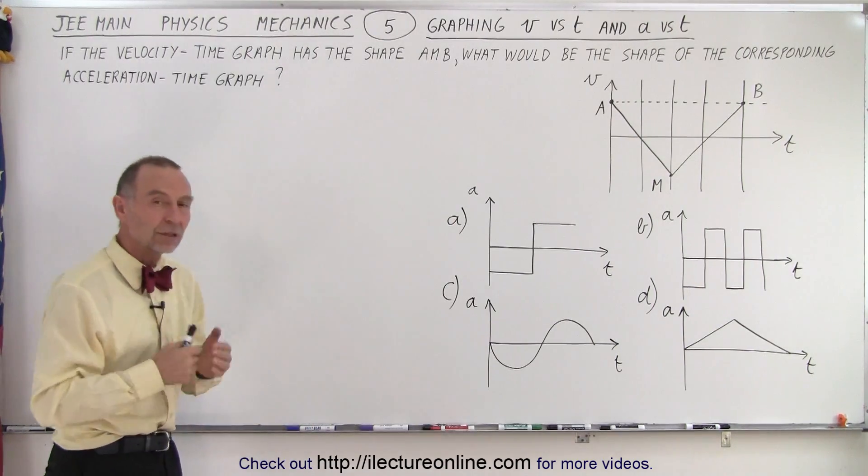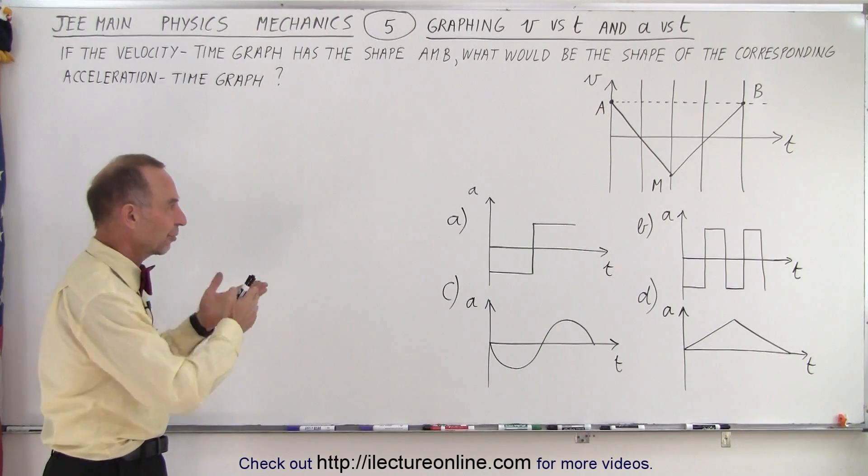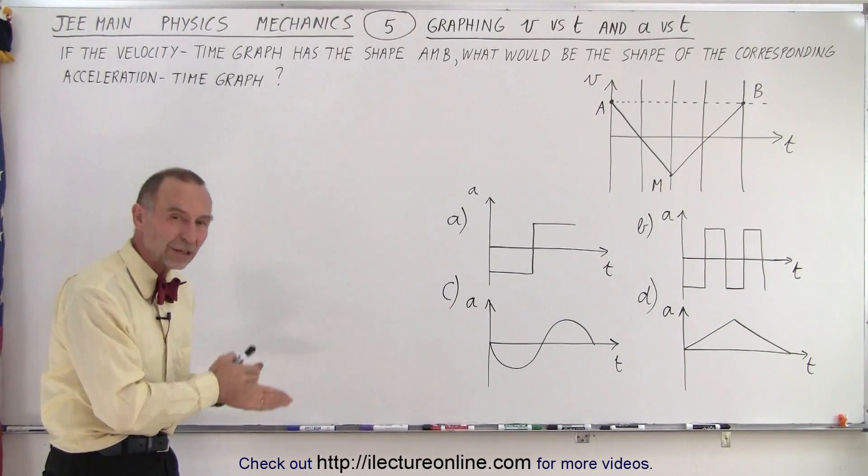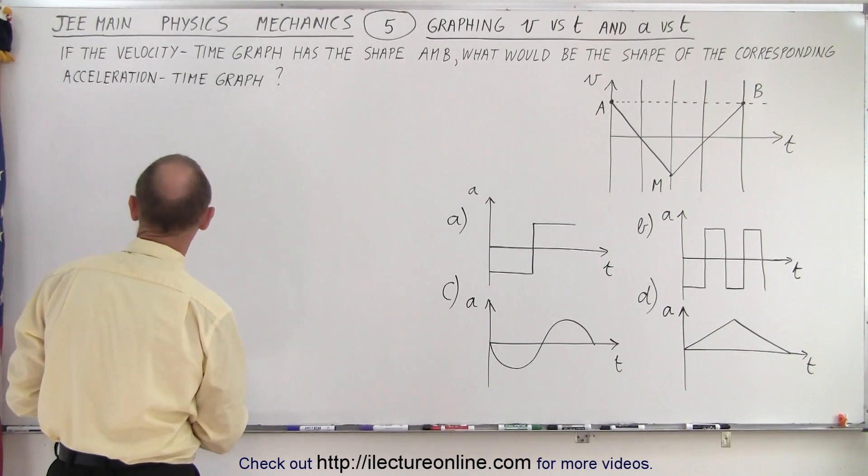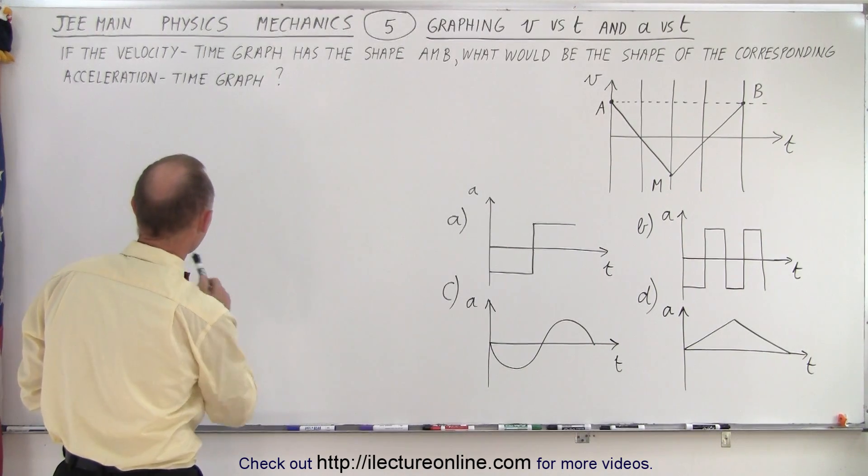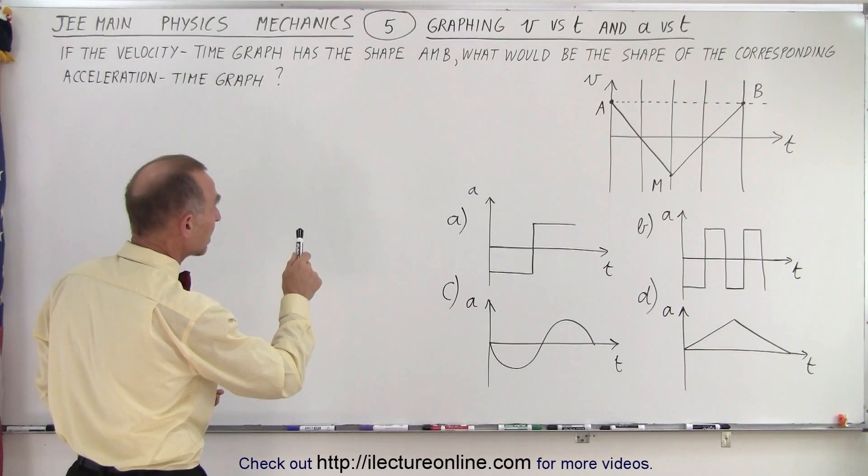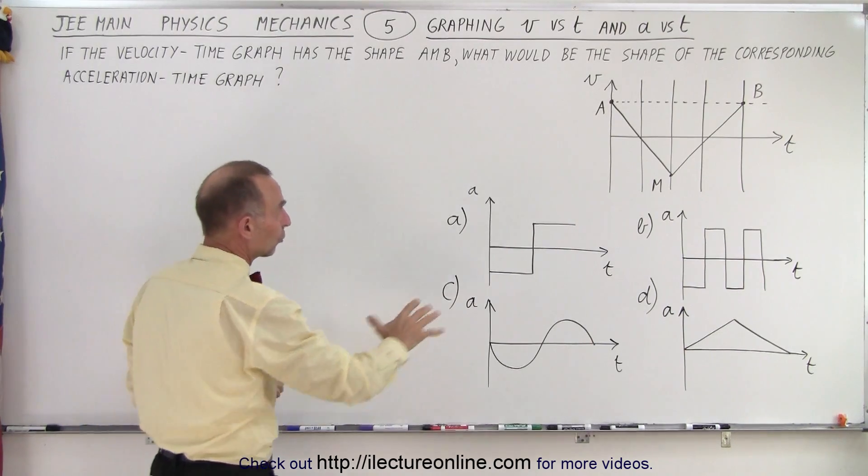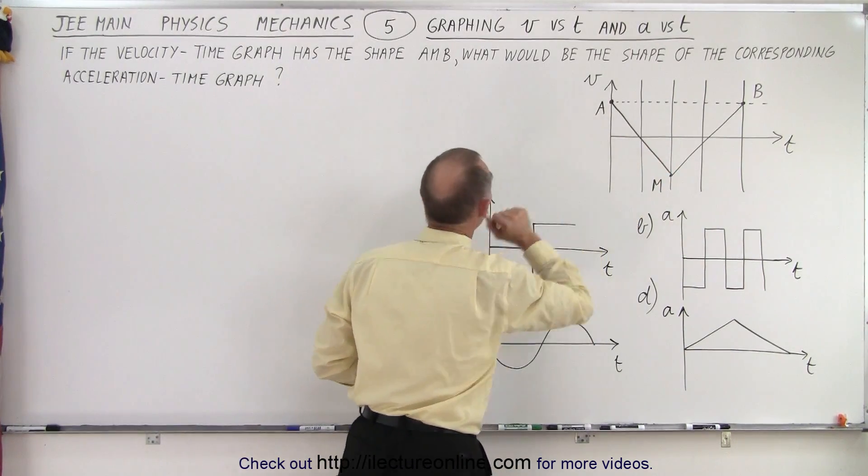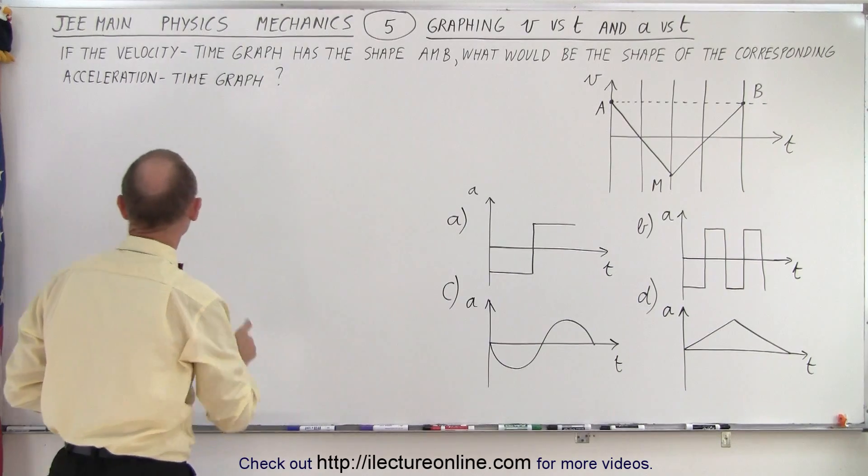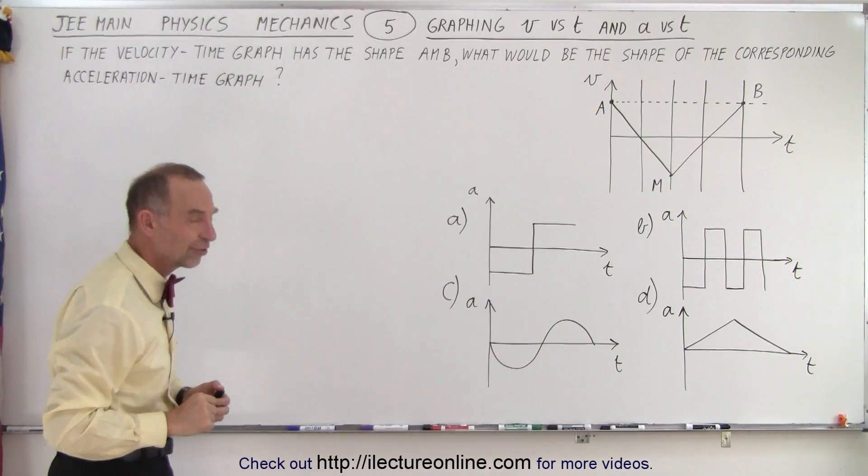So here we're dealing with the concept of graphing a velocity versus time graph and an acceleration versus time graph. And the question reads as follows: If the velocity time graph has the shape A and B as is indicated, so this was on the test right there, what would be the shape of the corresponding acceleration versus time graph?